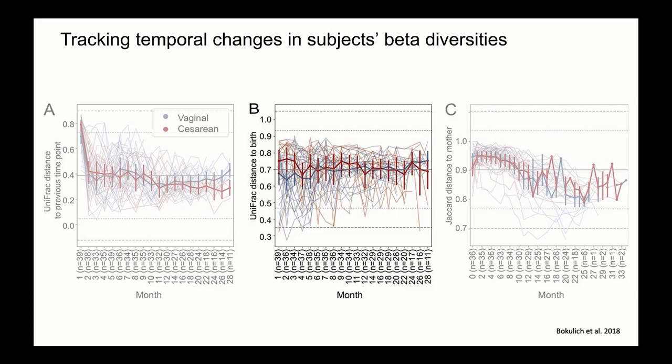Now let's look at panel B, where we can see the application of the baseline parameter using the first distance action. Each distance at each time point is calculated between that time point and the baseline, rather than comparing it to a successive time point. We can see that cesarean-delivered children show greater phylogenetic change from the baseline in the first three months of life, represented by higher distances from the baseline compared to children born vaginally.